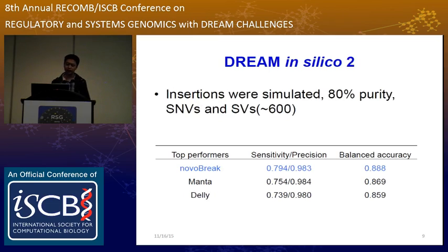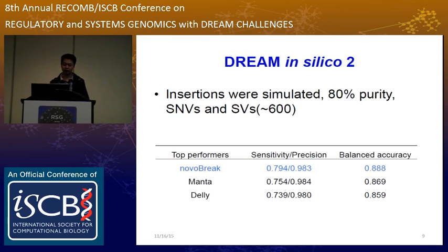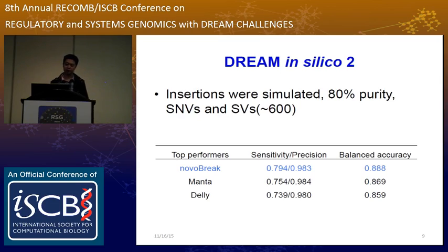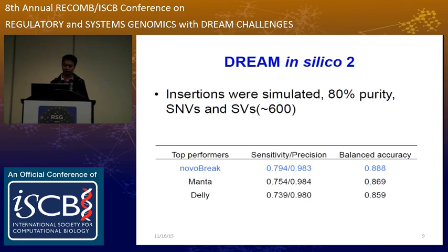We learned from in silico one and improved and developed the scoring system. In silico two added insertions and was at 80% purity, and the number of structural variations was increased to 600. We learned from in silico one, and the scoring system really worked. We achieved the best performance in this round.